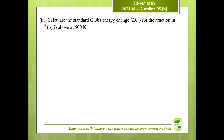Question number 3: calculate the standard Gibbs energy change for the reaction in part B1 at 500 kelvin. First, write the expression for standard Gibbs energy change: ΔG° equals ΔH° minus absolute temperature multiplied by ΔS°. Now substitute values into this expression.